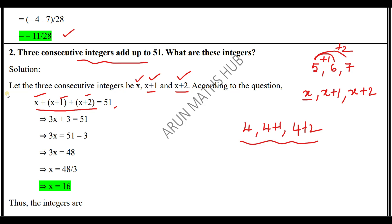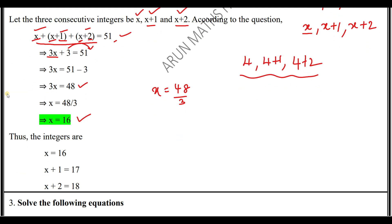The equation is: x + (x+1) + (x+2) = 51. Combining: 3x + 3 = 51. Shift 3 to the RHS: 3x = 51 - 3 = 48. Therefore x = 48/3 = 16. So the first number is 16, the next is 17, and the third is 18. That is x=16, x+1=17, x+2=18.